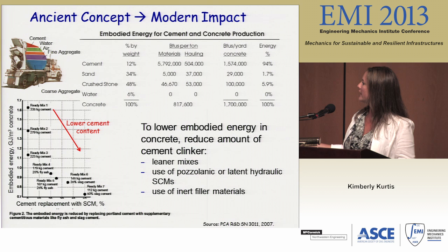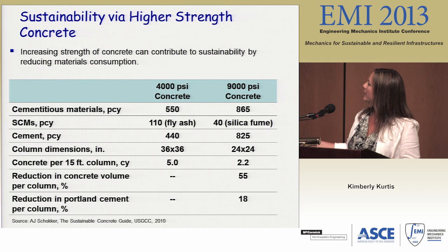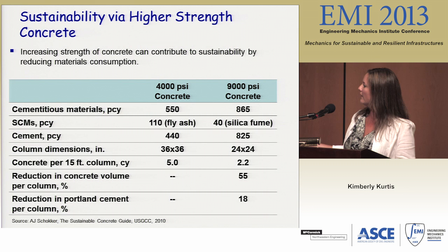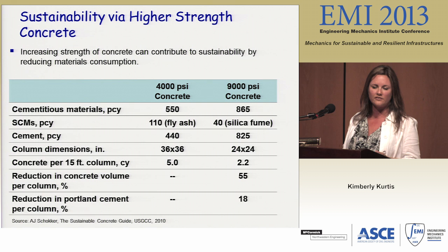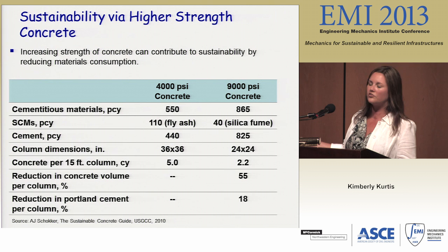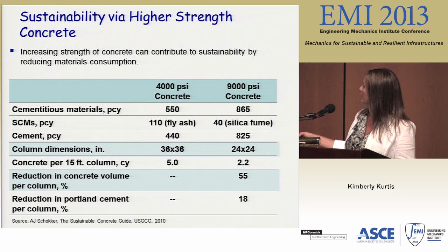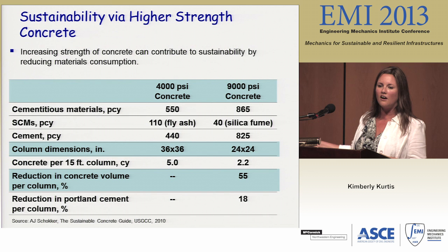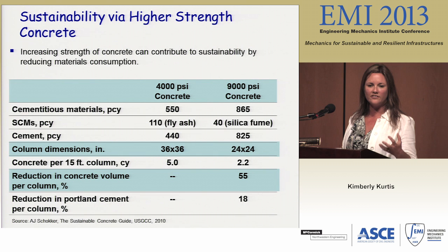We can also see the tie to higher-strength concrete. A chart published by Andrea Schöcker compares the relative sustainability of 4,000 psi normal strength concrete to a high-strength concrete. The 9,000 psi concrete has a much higher cementitious materials content and includes silica fume, but because of the higher strength we're actually able to decrease the column cross-section, which means using much less concrete. We can achieve those strength increases and see a net reduction in portland cement of almost 20 percent.